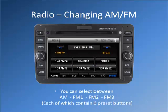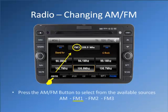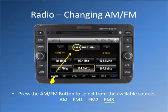You can select between AM, FM1, FM2, and FM3, each of which contains 6 preset buttons. Press the AM/FM1 button to select from the available sources: FM1, FM2, FM3, and AM.